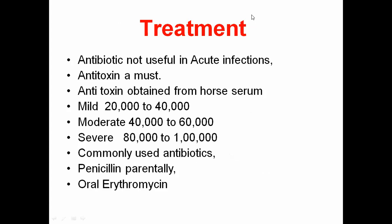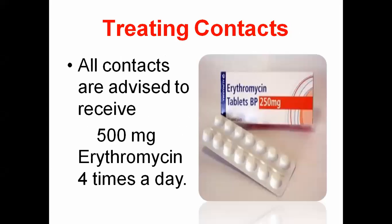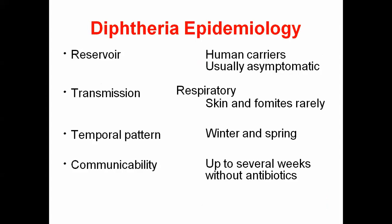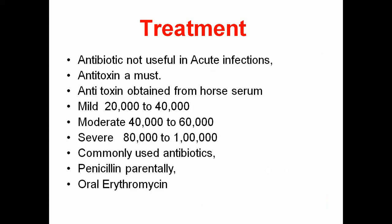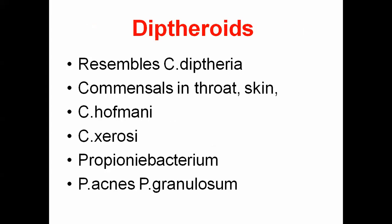Treatment: antibiotics are not usually useful in acute infection. Antitoxins are essential — obtained from horse serum. Mild cases: 20,000 to 40,000 units; moderate: 40,000 to 60,000; severe: 80,000 to 1,00,000 units. Commonly used antibiotics are penicillin and oral erythromycin. However, maximum effort is focused on prevention rather than treatment, as the vaccine drive is working effectively in all countries and most children are vaccinated, so these conditions are rarely reported.